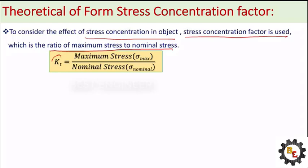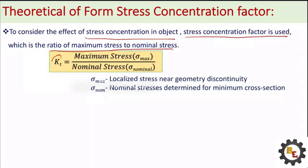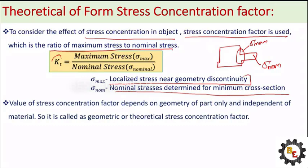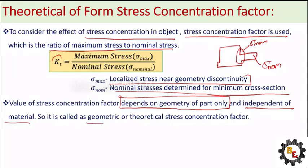To consider the effect of stress concentration, the stress concentration factor Kt is used, which is the ratio of maximum stress to nominal stress. The maximum stress is the localized stress near the geometry discontinuity where the shape is changing. Nominal stress is determined by the minimum cross-section area. The value of stress concentration factor depends on the geometry of the part only — it is independent of the material. Therefore, it is called the geometrical or theoretical stress concentration factor.